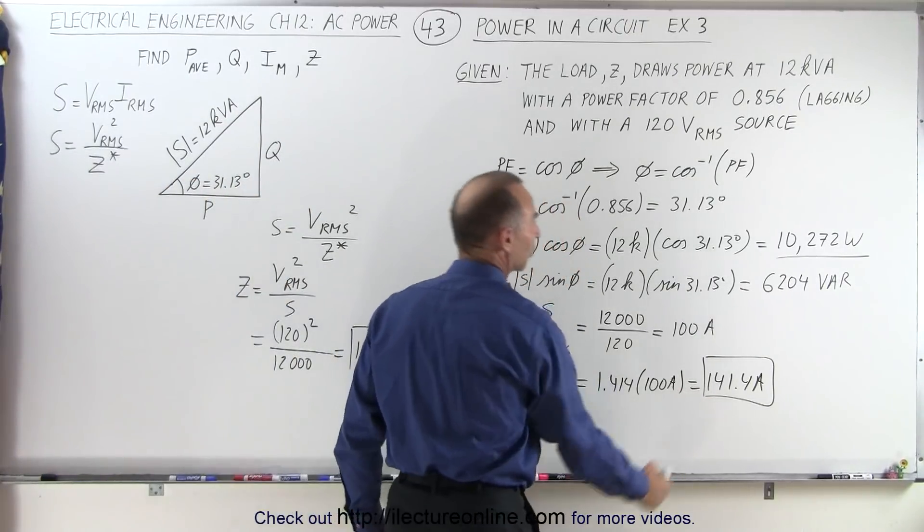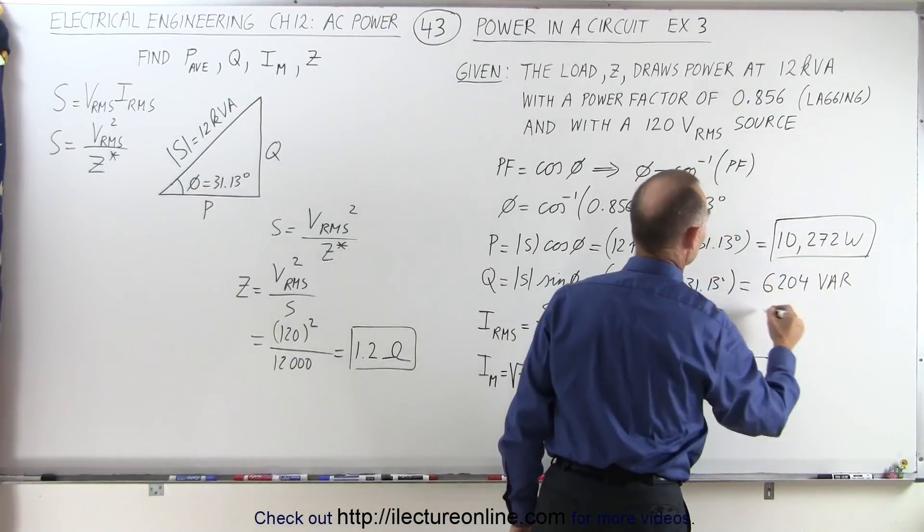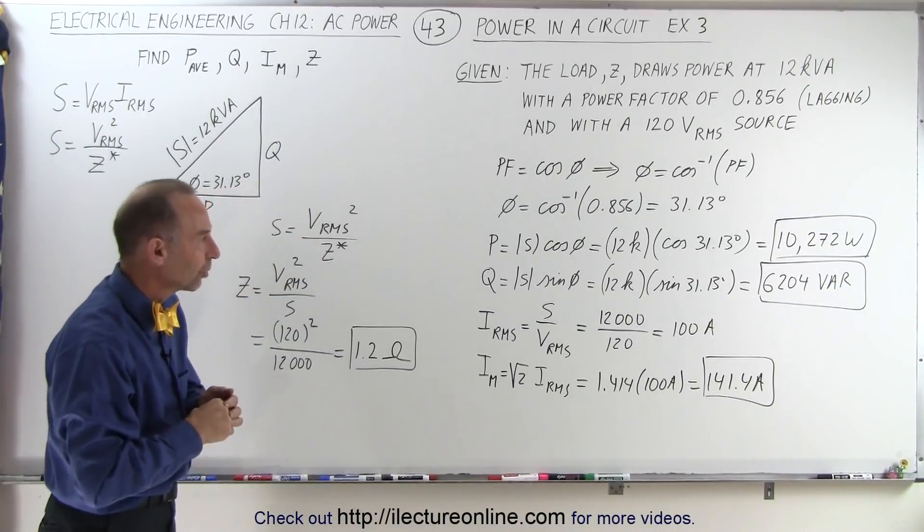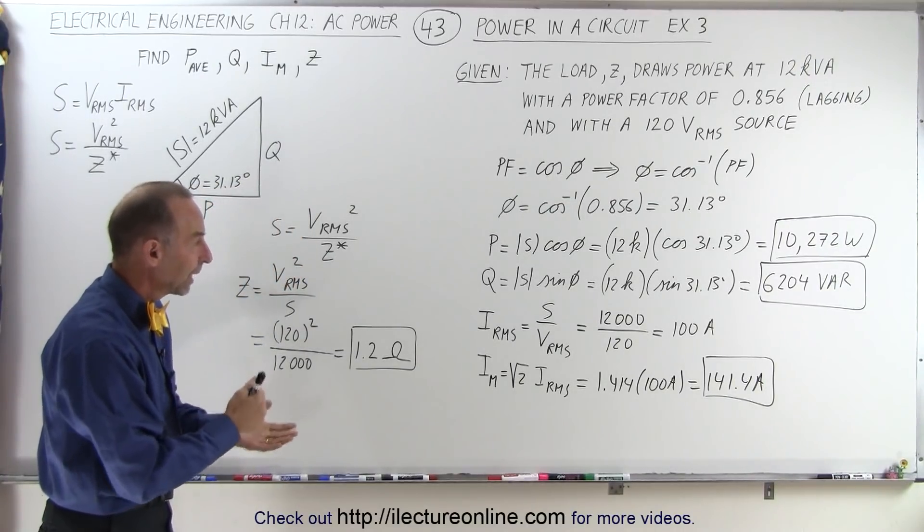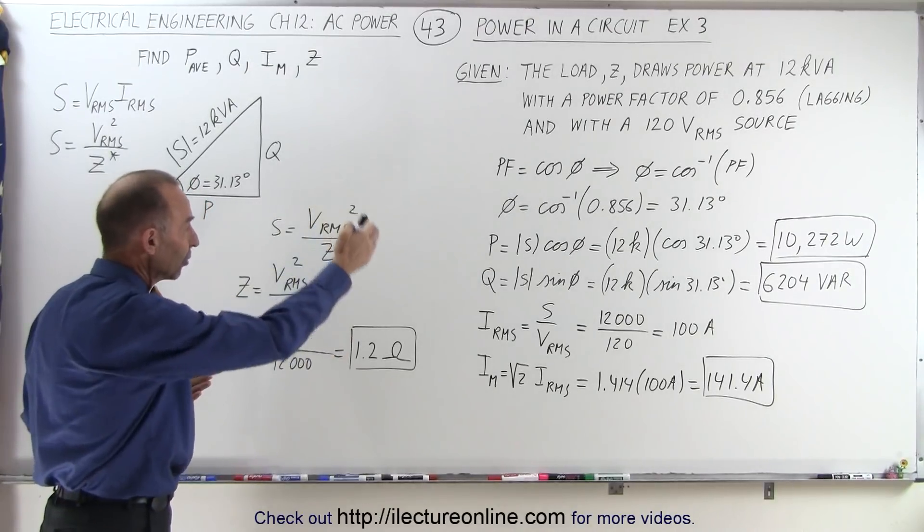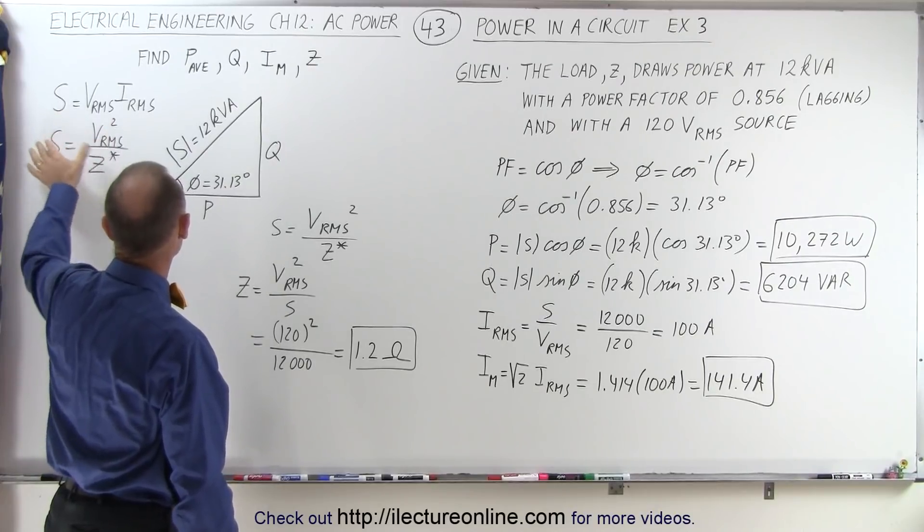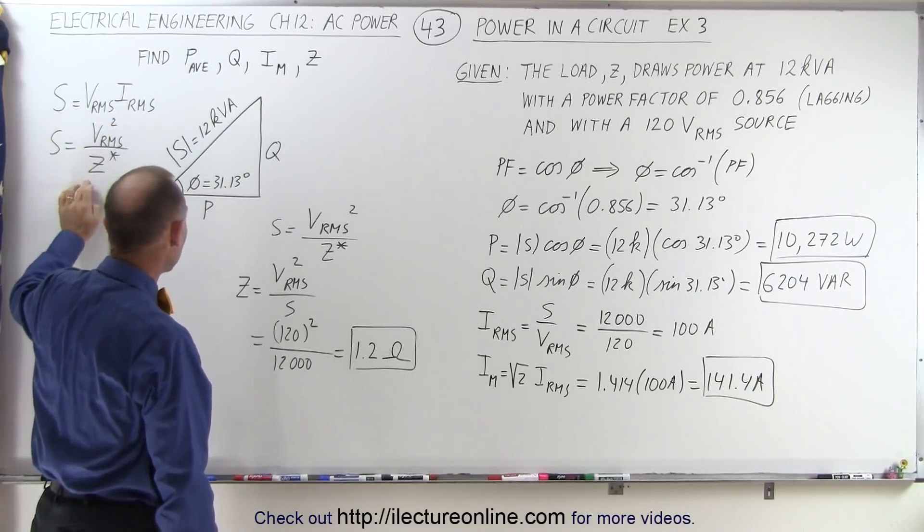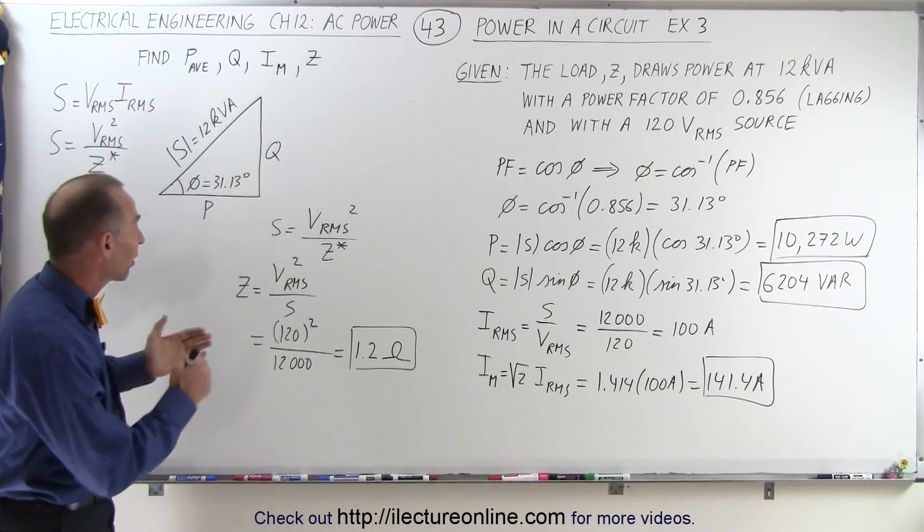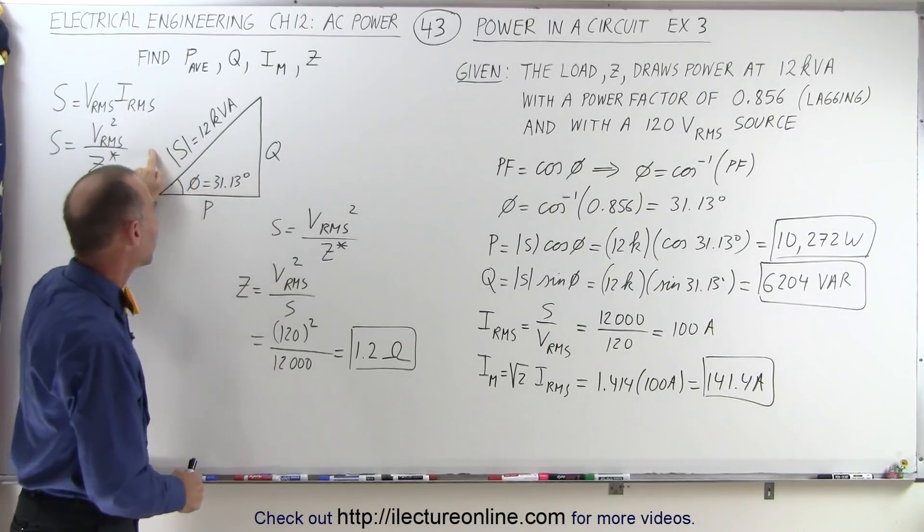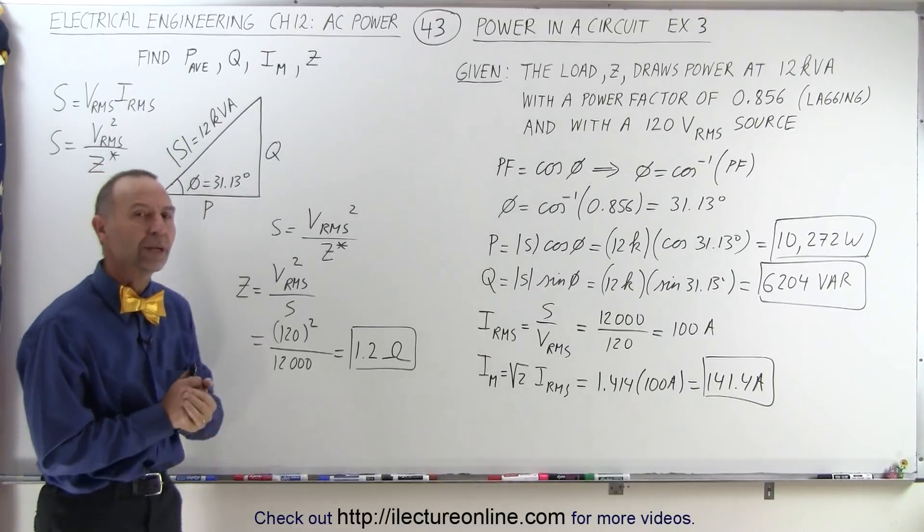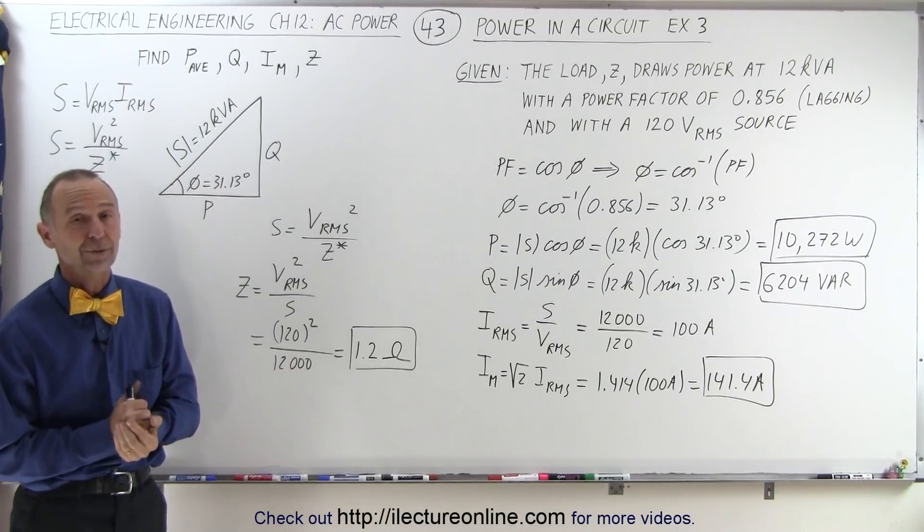We have the maximum current, we have the power dissipated, and the part of the complex power which is called the reactive power in our particular circuit. And that's how it's done. So it almost doesn't matter what they give you. By using the proper combinations of relationships between S, V, and I, and S, V, and Z, we can find just about anything, especially if we always take advantage of the concept of that triangle. We have P, Q, S, and also have R, X, and Z, all related to the phase angle. And that's how we work out these types of problems.